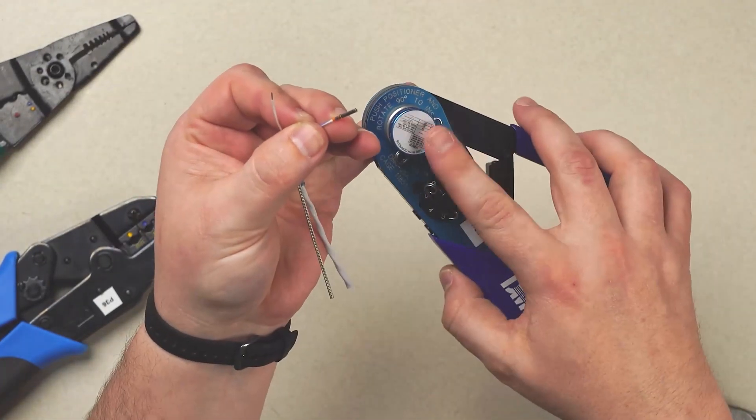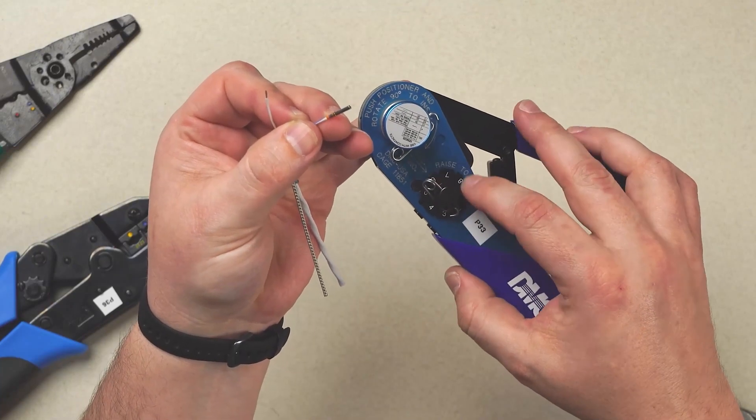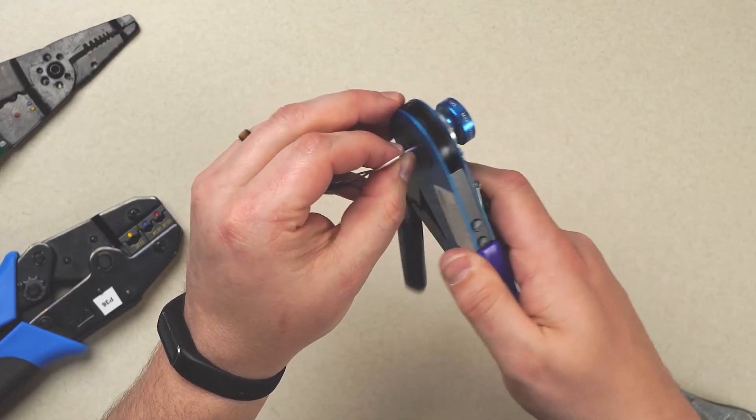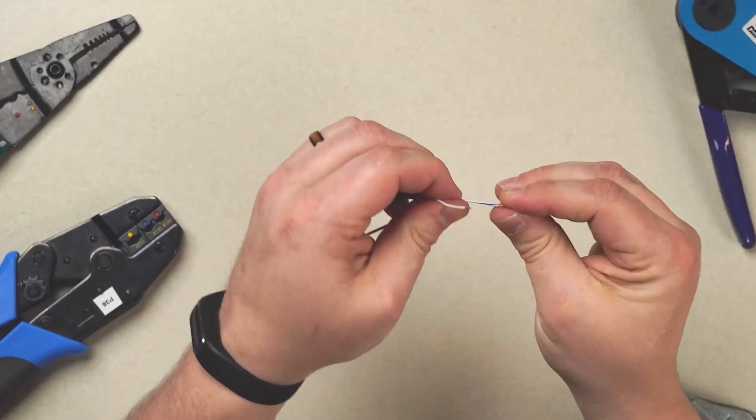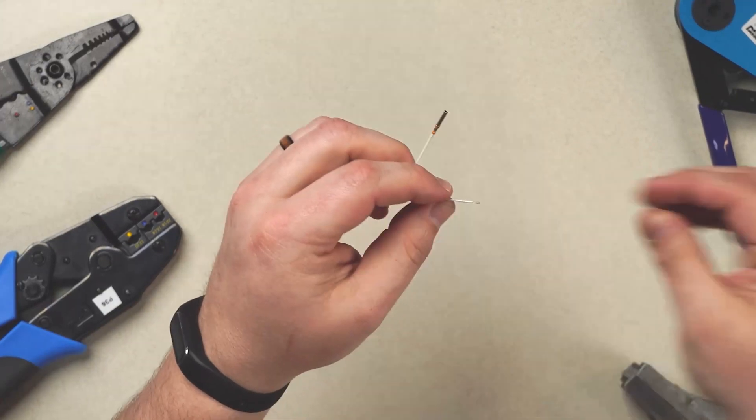We're going to make sure we've got our proper positioner and use this chart on the back here to make sure we set to the proper crimp dimension. Insert the assembly into the crimper tool. And establish the wire, give it a tug, make sure it's all driven home correctly.